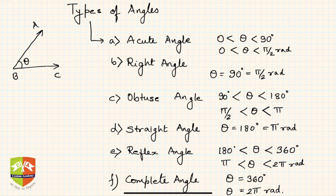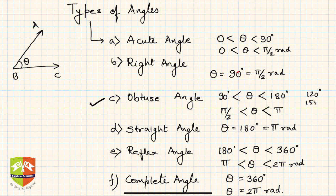A right angle is an angle which makes exactly 90 degrees — the angle between the two arms is 90 degrees. Then there is the obtuse angle — obtuse means something between 90 and 180 degrees. Neither 90 nor 180 degrees are included, so examples would be 120 degrees or 155 degrees and so on.